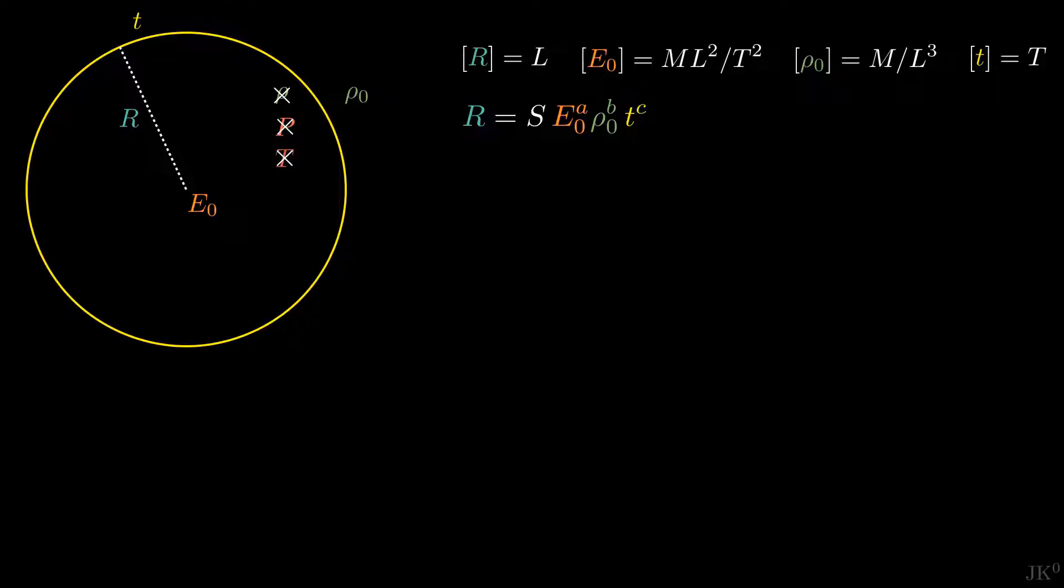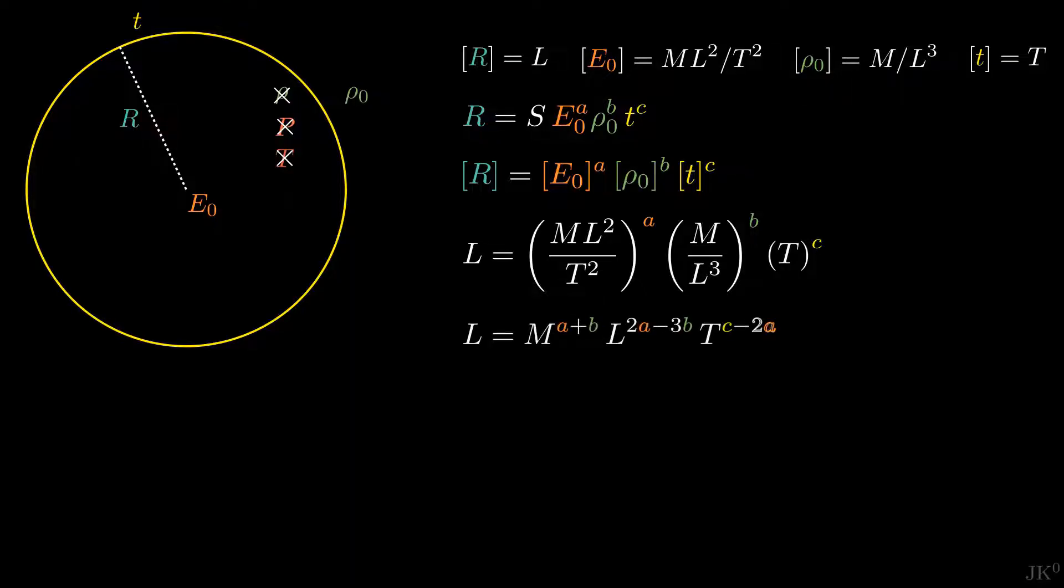Again, s is just a constant without dimensions. The next step is we replace the dimensions of each term in the equation above. On the left hand side we get the dimensions of the radius, which is length, and on the right we get all this combination of terms, where I have replaced the dimensions of energy to the power of a, the dimensions of density to the power of b, and time to the power of c. Then we group all similar dimensions together, so that we get the mass to a plus b, length to the power of 2a minus 3b, and time to the power of c minus 2a.